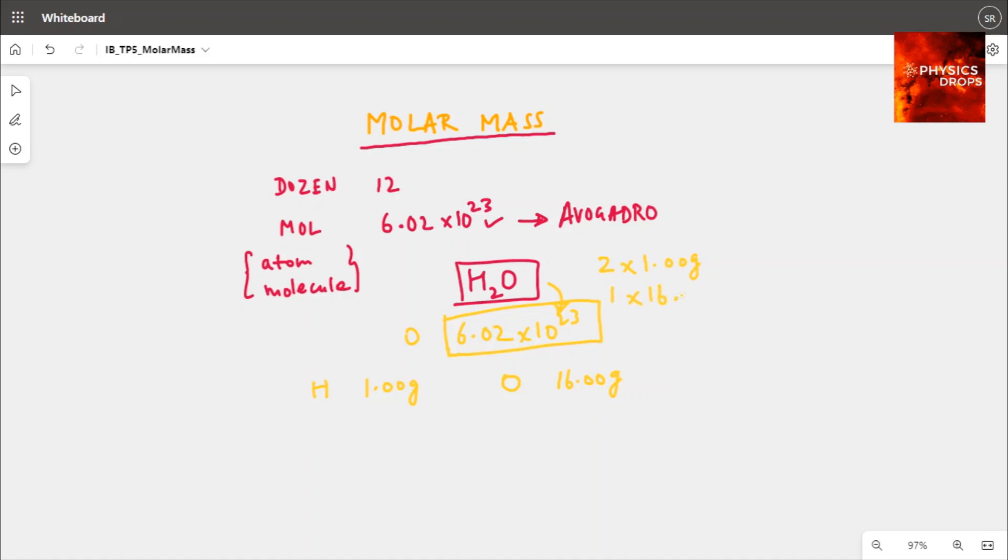And oxygen is only one atom, so one times 16 grams. This total will be 2 plus 16 is 18 grams per mole - is the molar mass of water molecule. Molar mass of water, because H2O, if it's Avogadro number times H2O molecule, would mean Avogadro number times H2 and Avogadro number times O.